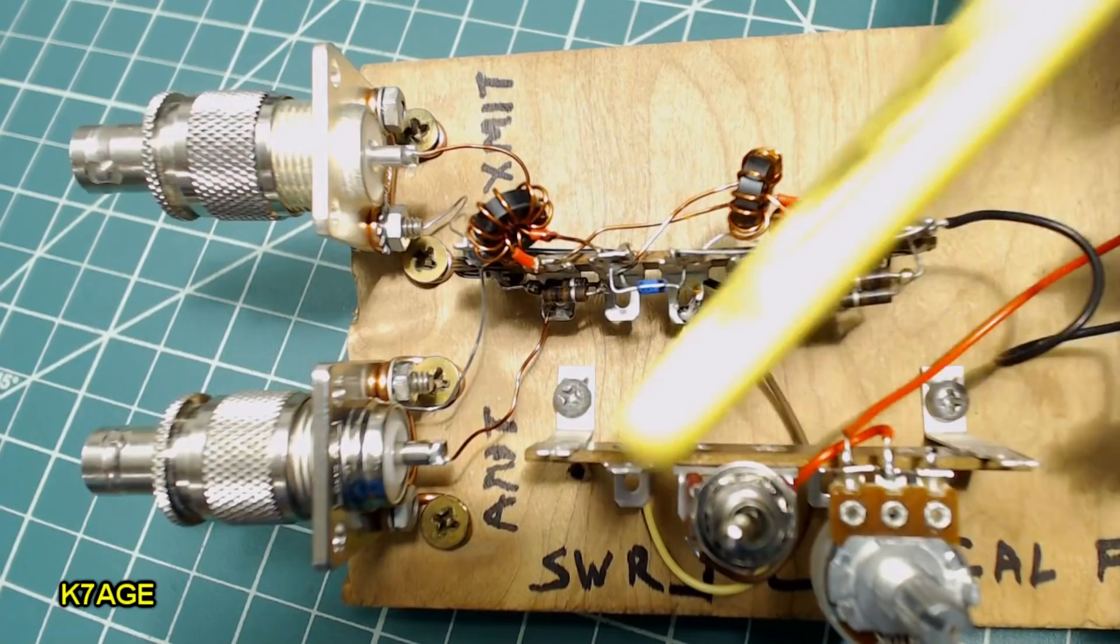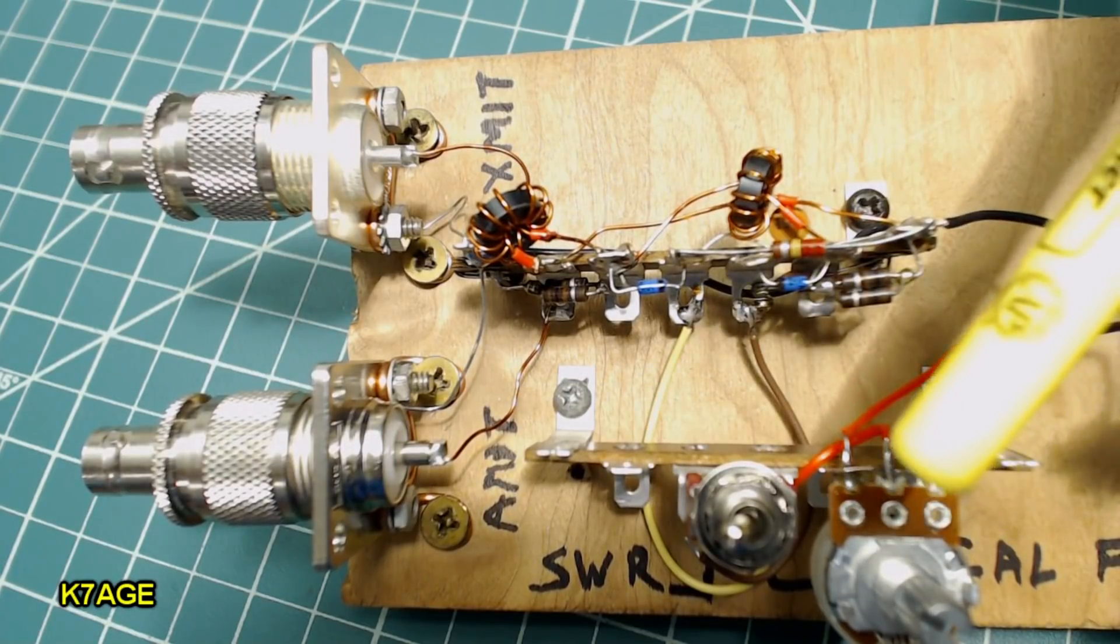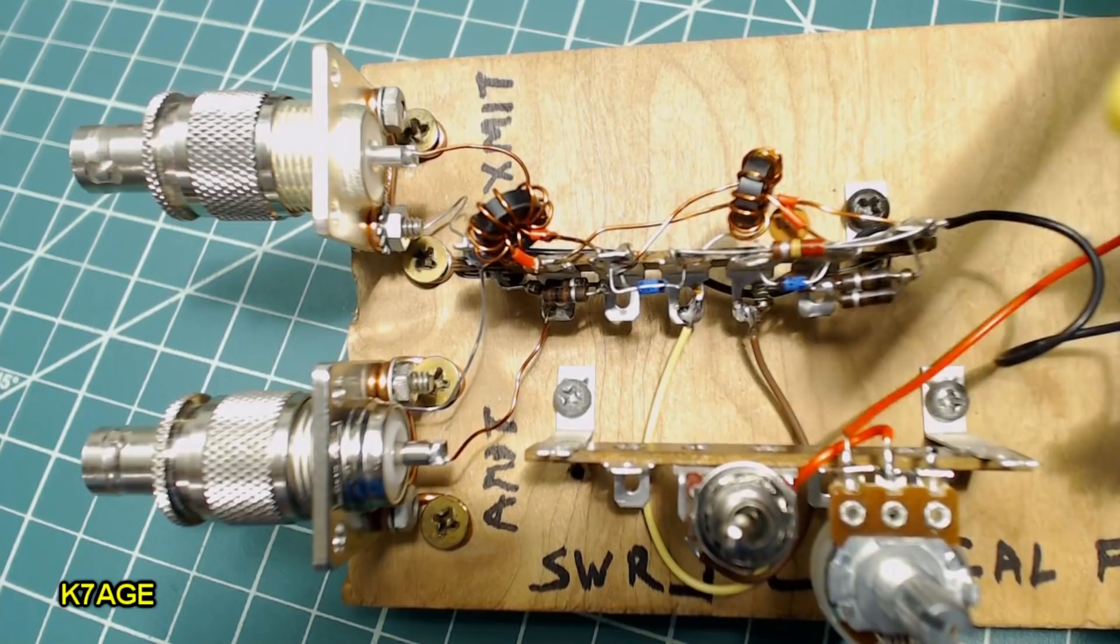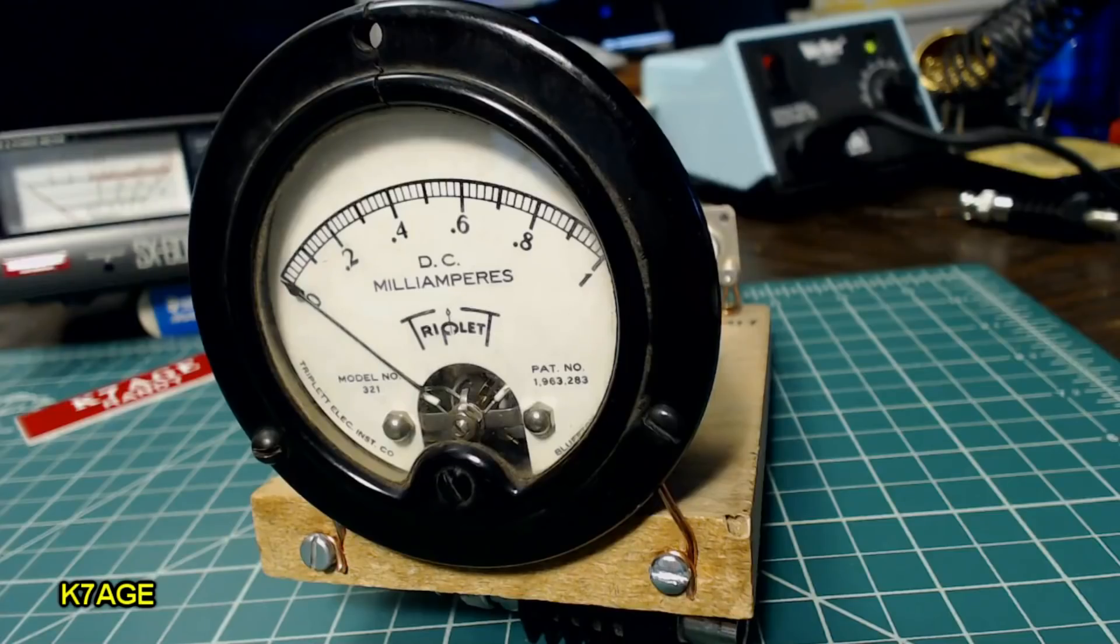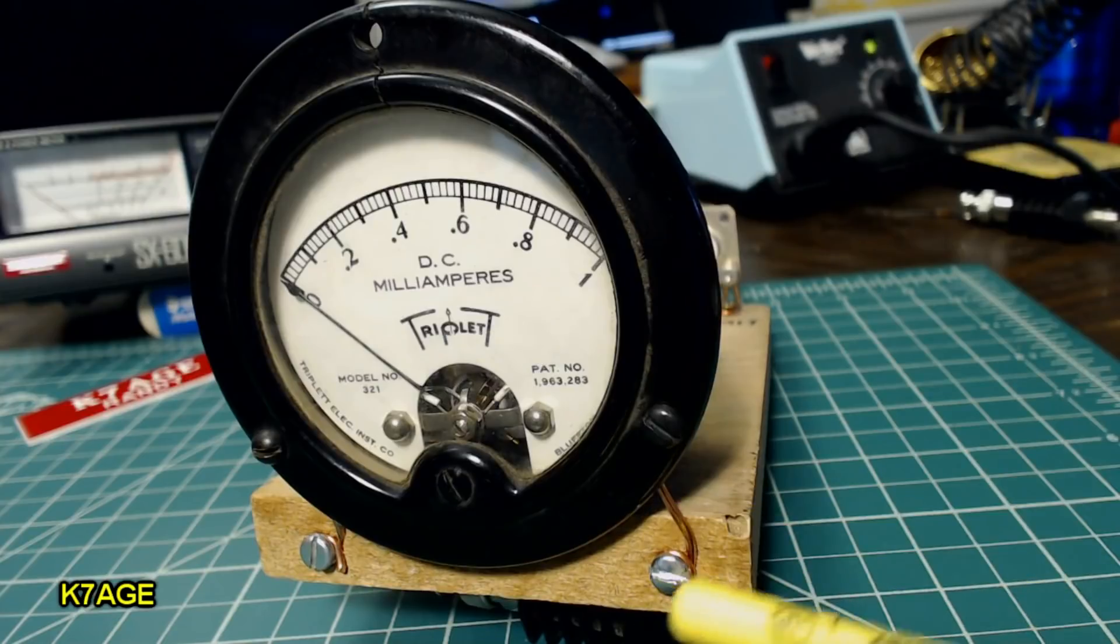This terminal strip here has a couple parts on there to deal with the SWR switching. We'll get to that a little bit later. And on the front here I have the 1 milliamp meter also mounted with some heavy wire and a couple wood screws. Not very fancy.